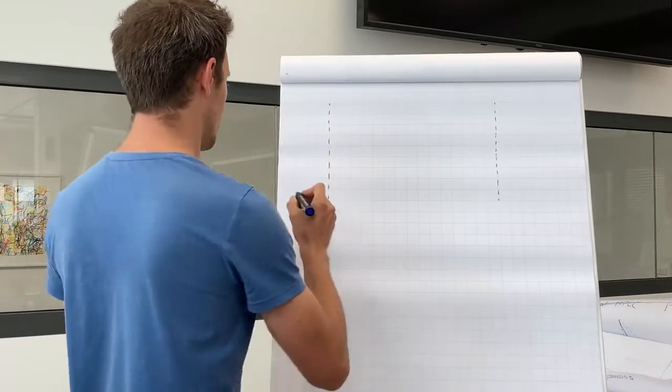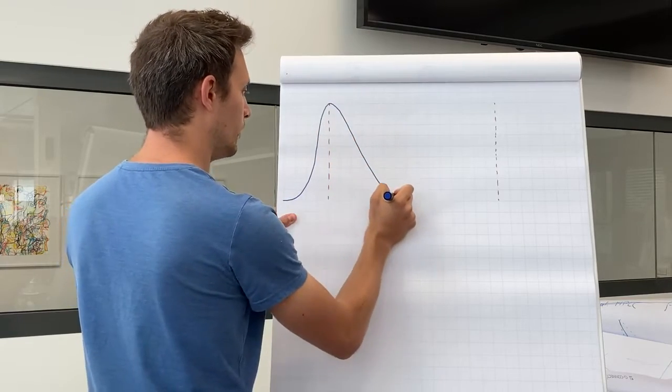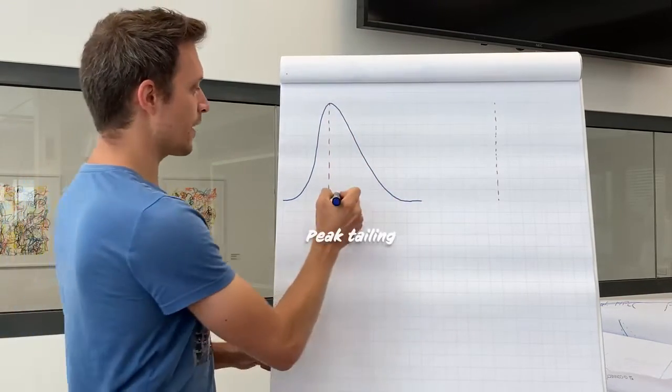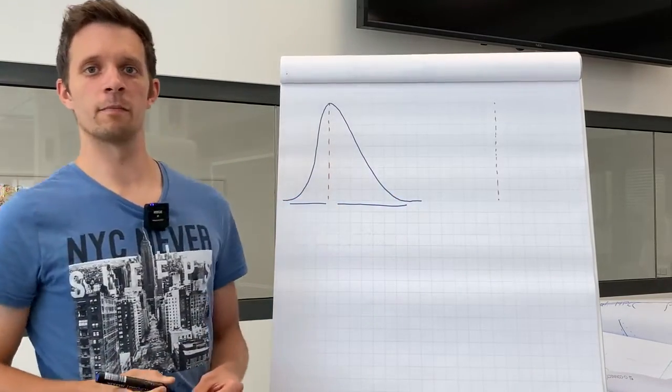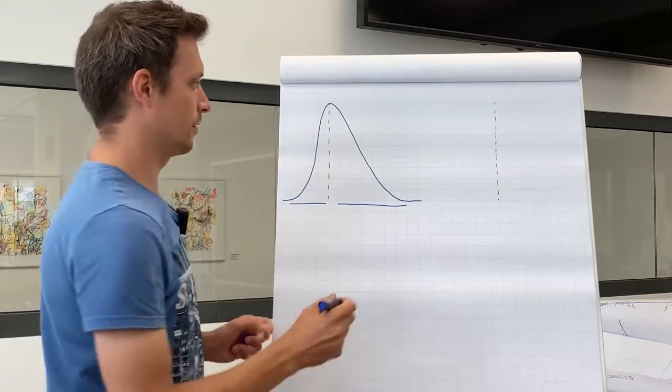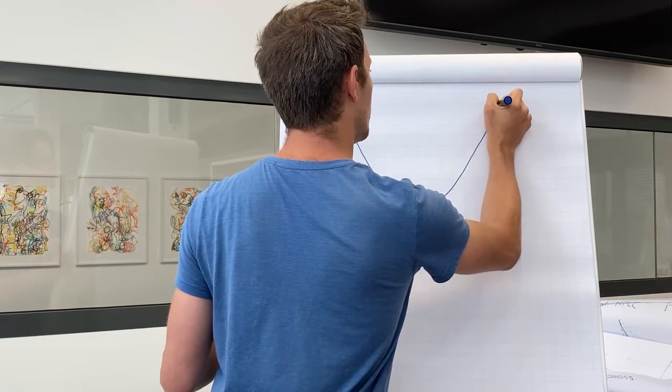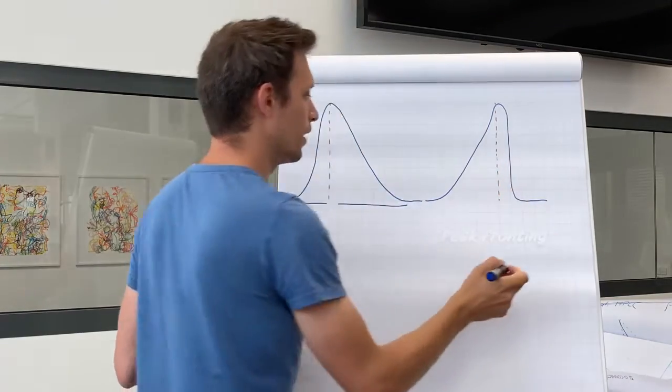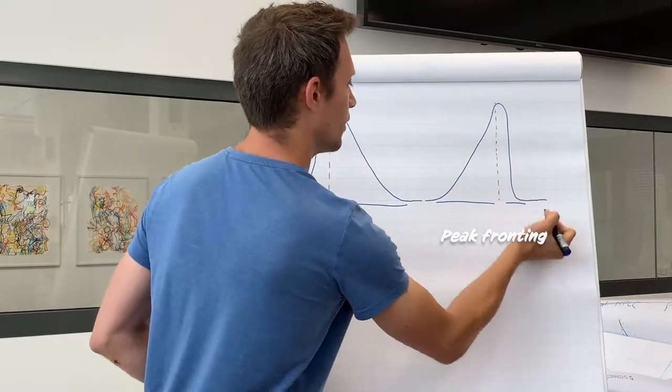First, let's define how these peak types look like. We'll start with peak tailing. Peak tailing occurs when the second half of your peak is much wider than the first half. The opposite of peak tailing is peak fronting. Look. Here, the first half of the peak is wider than the second half.